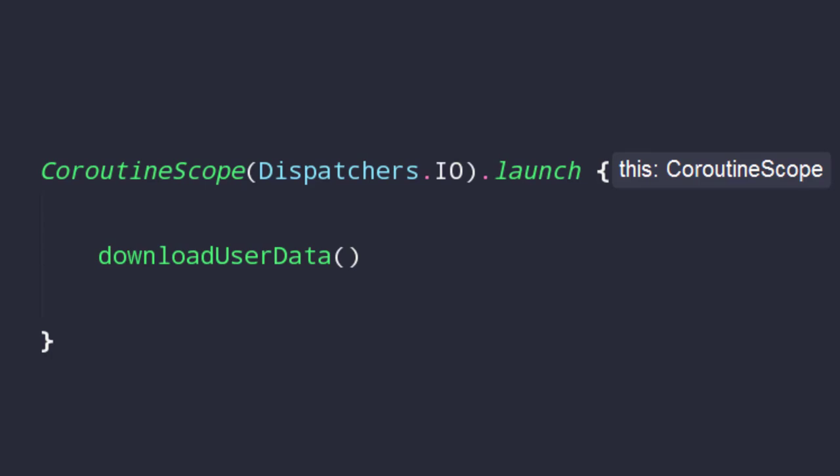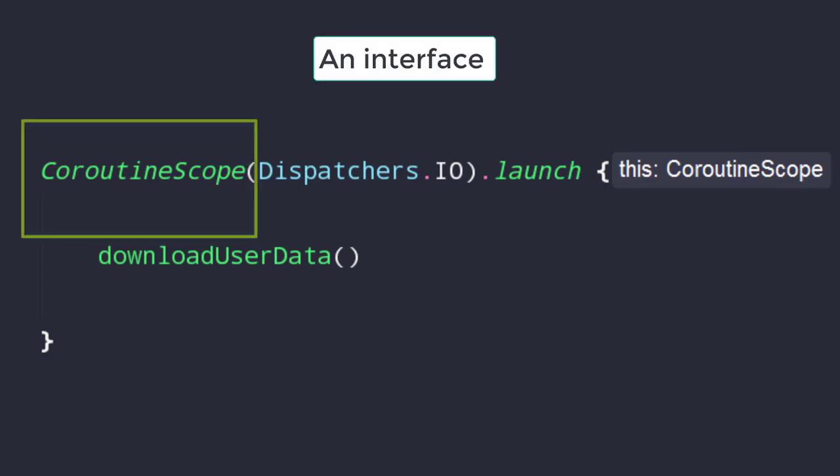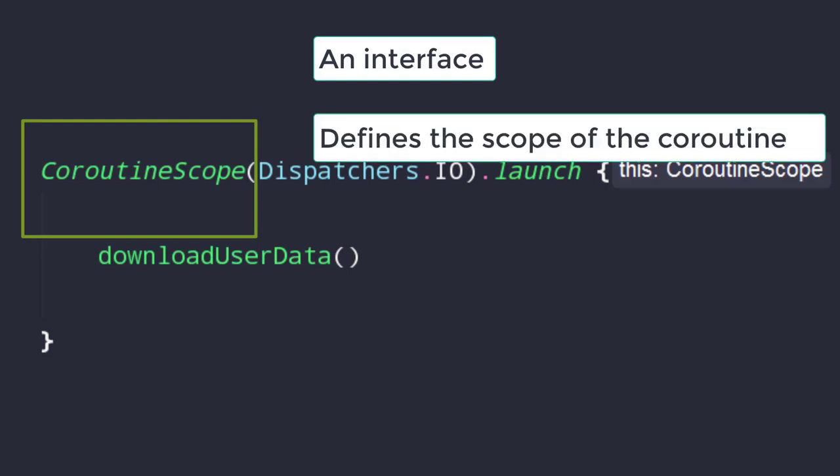Luckily, Kotlin's creators have already fixed that problem. In Kotlin coroutines, we must start all coroutines within a scope. Using properties belonging to the scope, we can easily keep track of coroutines, cancel coroutines and handle errors or exceptions. So this CoroutineScope interface provides the scope to our coroutines.